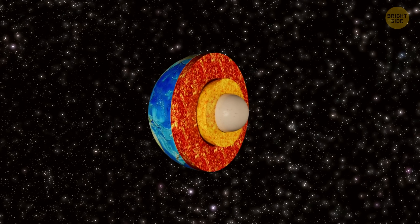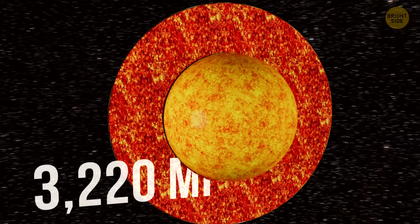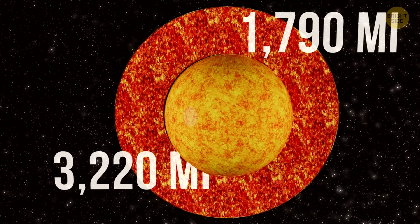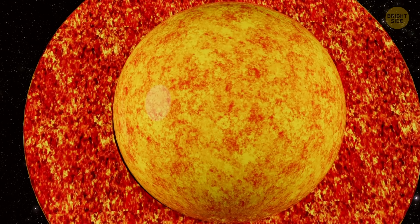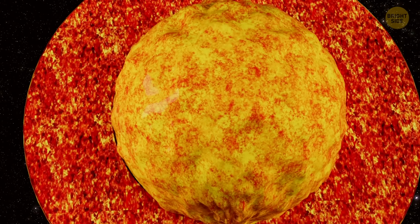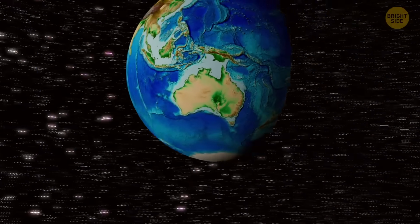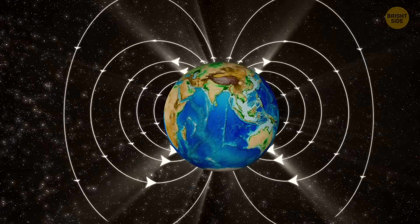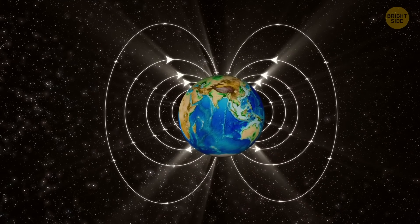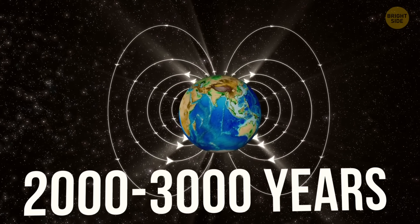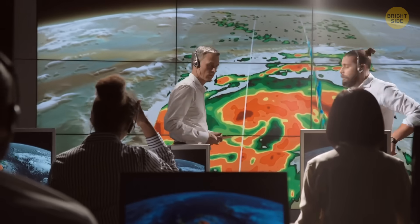The outer core is also made of iron and nickel, but in liquid form. It sits about 3,200 to 1,800 miles beneath the surface. The heat here comes mostly from the radioactive decay of elements, like uranium and thorium, causing the liquid to churn in massive, turbulent currents. This motion creates electrical currents, which generate Earth's magnetic field. Interestingly, Earth's magnetic field reverses about every 200 to 300,000 years, and scientists are still trying to figure out exactly why it happens.